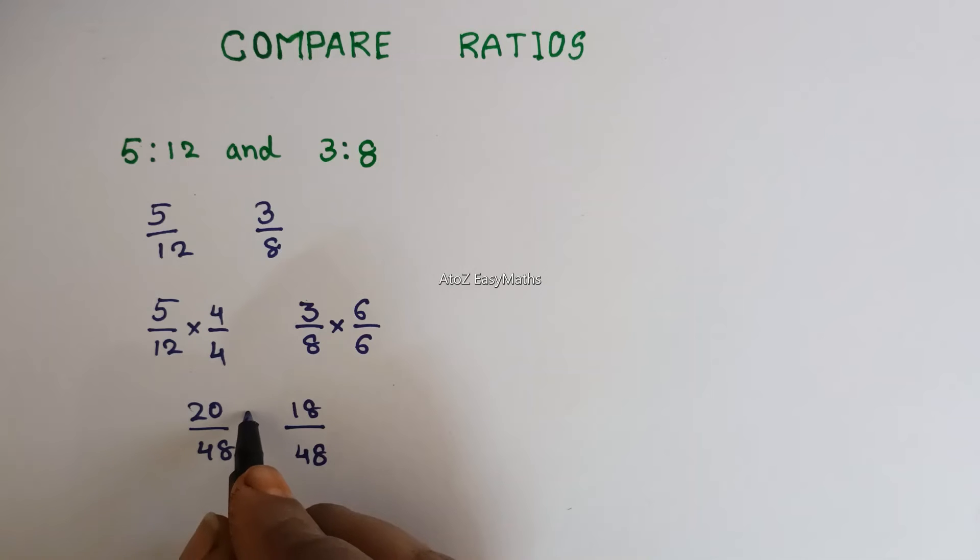We know that the higher numerator is the higher value. So now ultimately, 5 is to 12 is greater than 3 is to 8. We can see one more example.